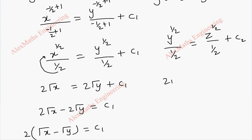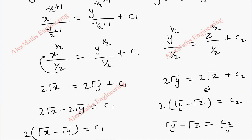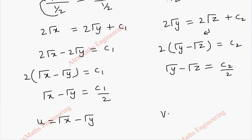So this is 2 root y equal to 2 root z plus c2. So taking two common, that is after bringing this here, we get root y minus root z. And now, root y minus root z is c2 by 2. And this can be taken as v, which is root y minus root z.